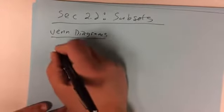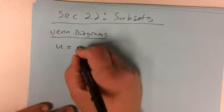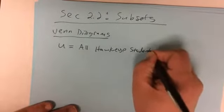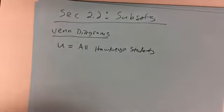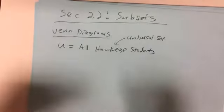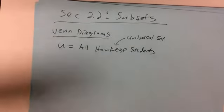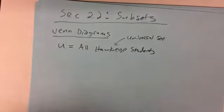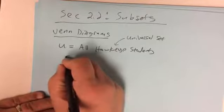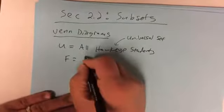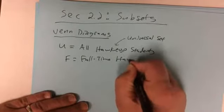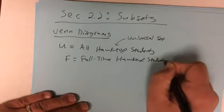The idea with Venn diagrams is you always start with a universal set. Let's just let this be all Hawkeye students — all Hawkeye students enrolled spring of 2019 or whatever semester it is. So this is the universal set.